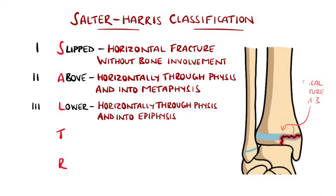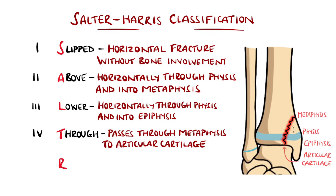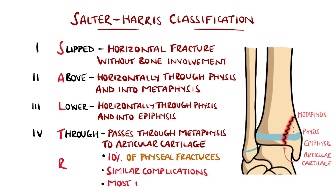The T is for through, or type 4, which is typically a vertical fracture passing through four different sections: the metaphysis, the physis or growth plate, the epiphysis, and then into the articular cartilage. These make up around 10% of cases, and like type 3, often feature complications and require open reduction and internal fixation.